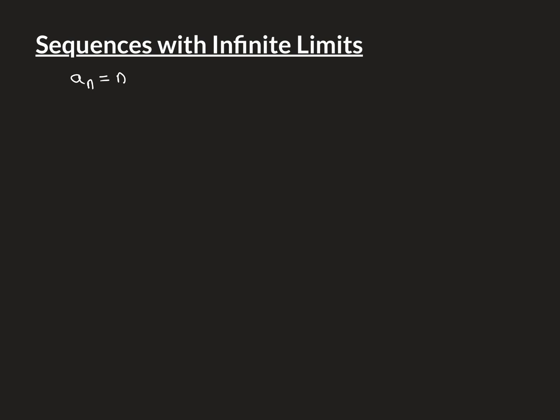We're going to start with the simplest example, which is the sequence a_n defined as n. So the sequence is going to be 1, 2, 3, 4, 5, etc., getting indefinitely big. If you're following along in the real analysis or calculus playlist, we have looked at the epsilon definition of the limit of a sequence, and this does not meet the criteria to have a limit. There is no number within the real line that this sequence gets to and stays indefinitely close to.